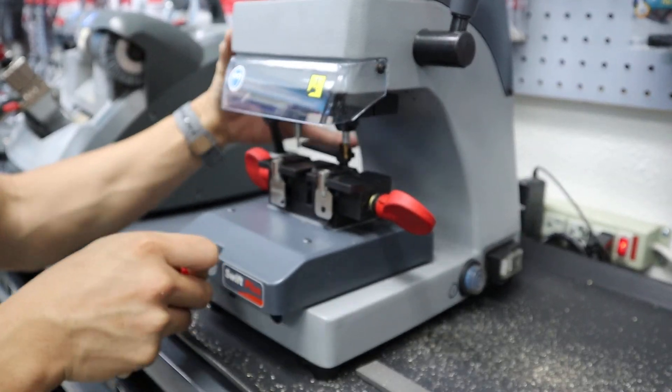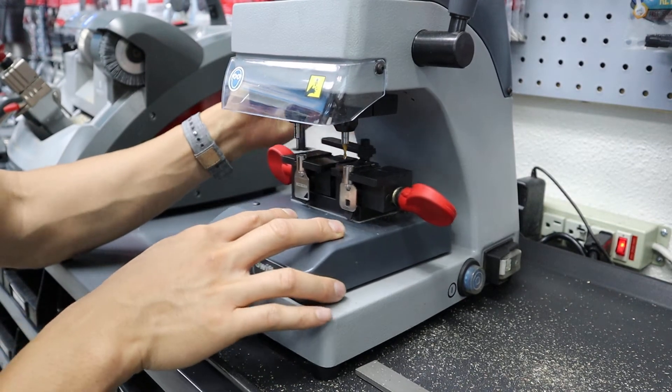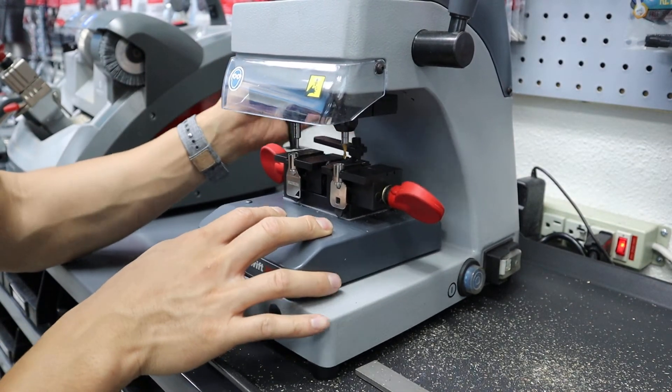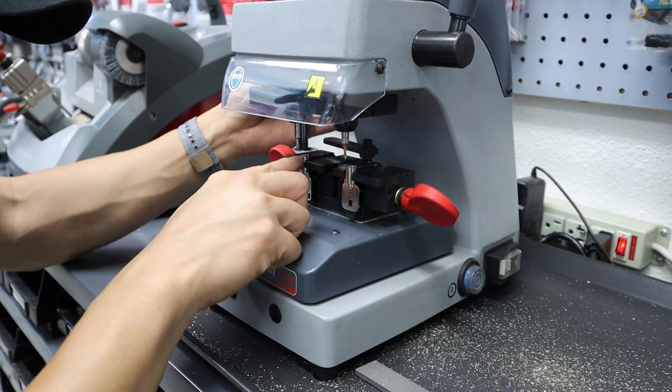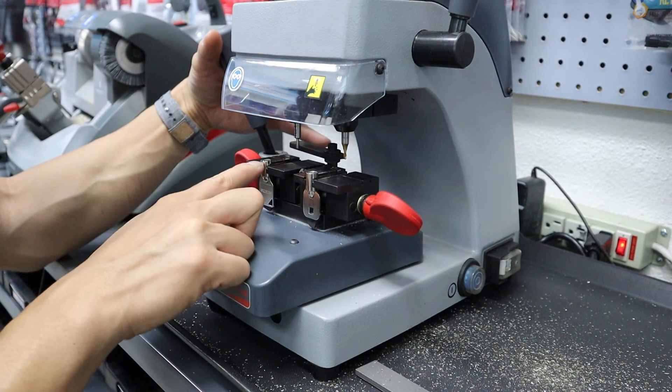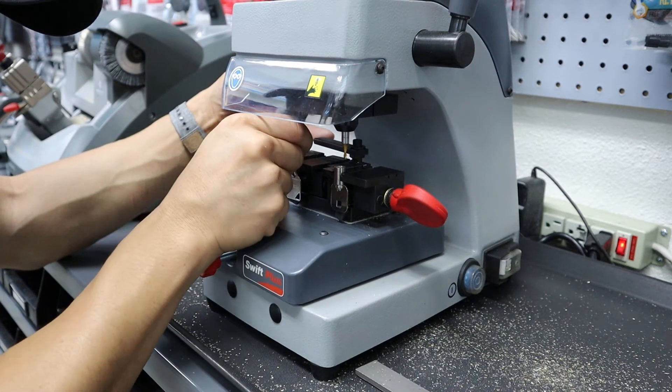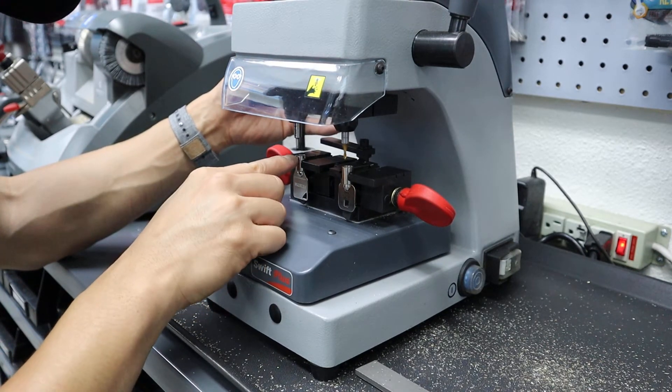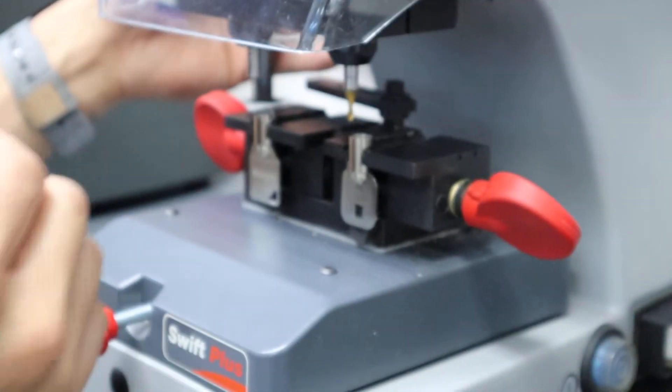You see how the carriage rotates in a 3D plane, so you can move it in a bunch of different directions. Now to do this, there's little grooves on the tubular laser cut keys. And what we want to do is get this tip stop where those little notches are.